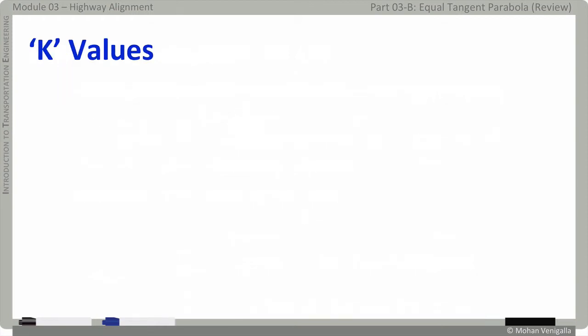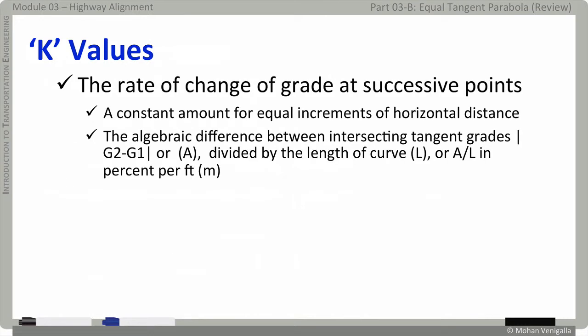For design purposes, the values are further simplified, and the so-called K values are nothing less than a beauty. The rate of change of grade at successive points is a constant amount for equal increments of horizontal distance. We talked about this a little earlier. An algebraic difference between intersecting tangent grades, which is modulus of G2 minus G1, which we called earlier A. And if you divide that by the length of the curve, what is it going to give you? It's going to give you rate of change of grade per unit length. A over L, in percent per feet, in percent for feet. A is in percent, and it's going to be in percent for feet, or meters if you are using SI system.